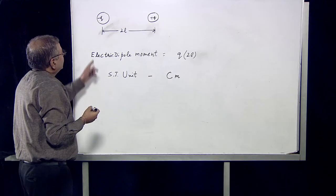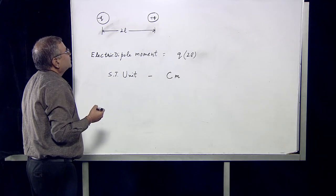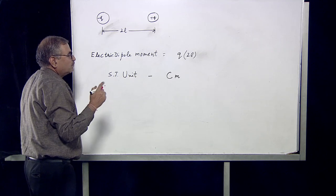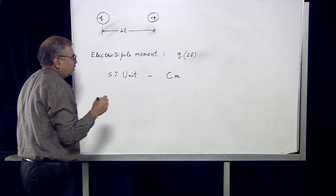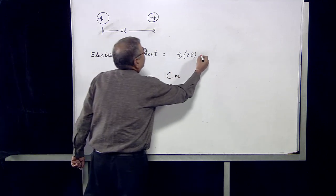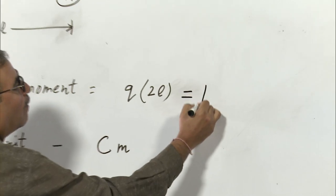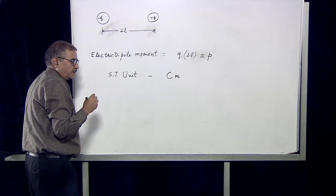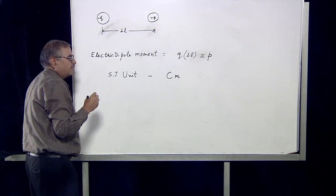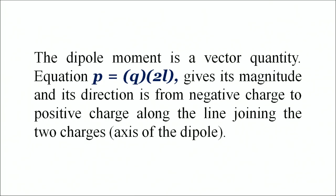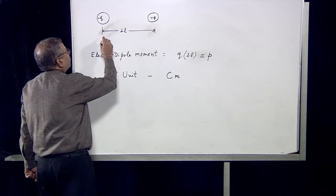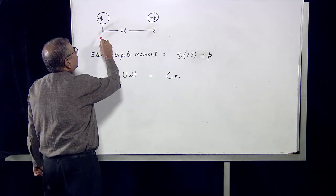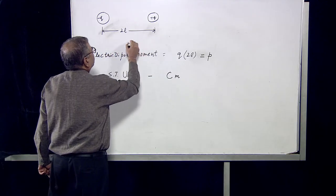This electric dipole moment is represented with symbol P. It is a vector quantity, so some direction should be associated with it. The direction of P is always from negative charge to the positive charge.